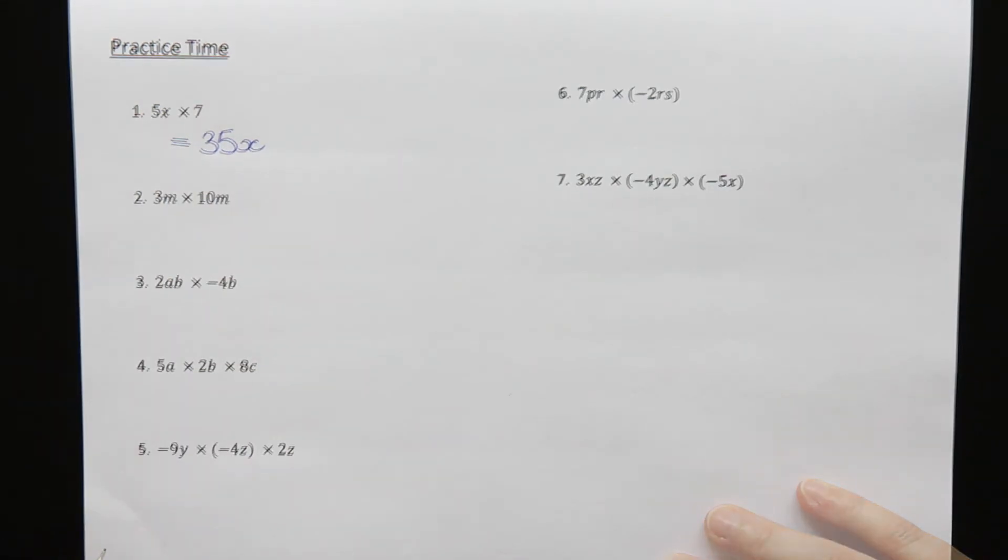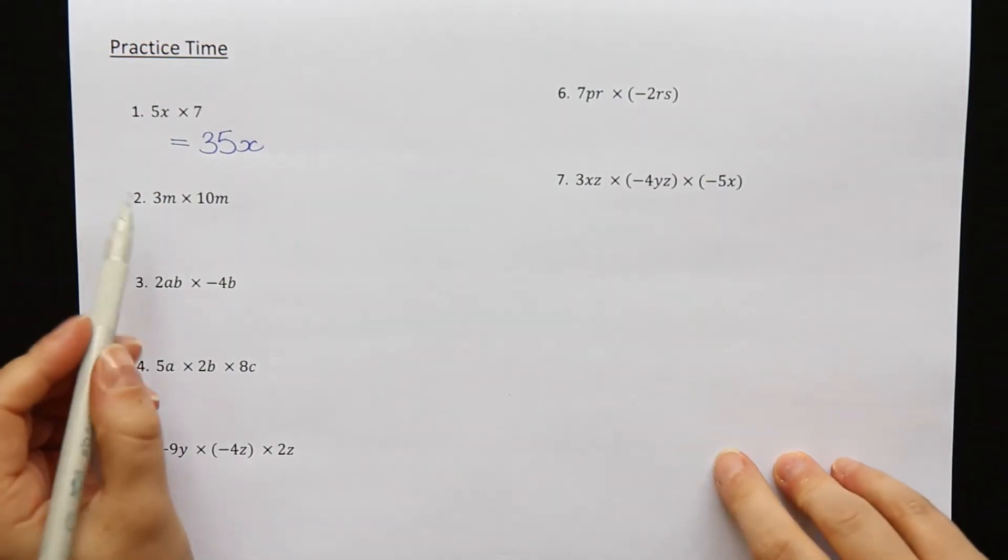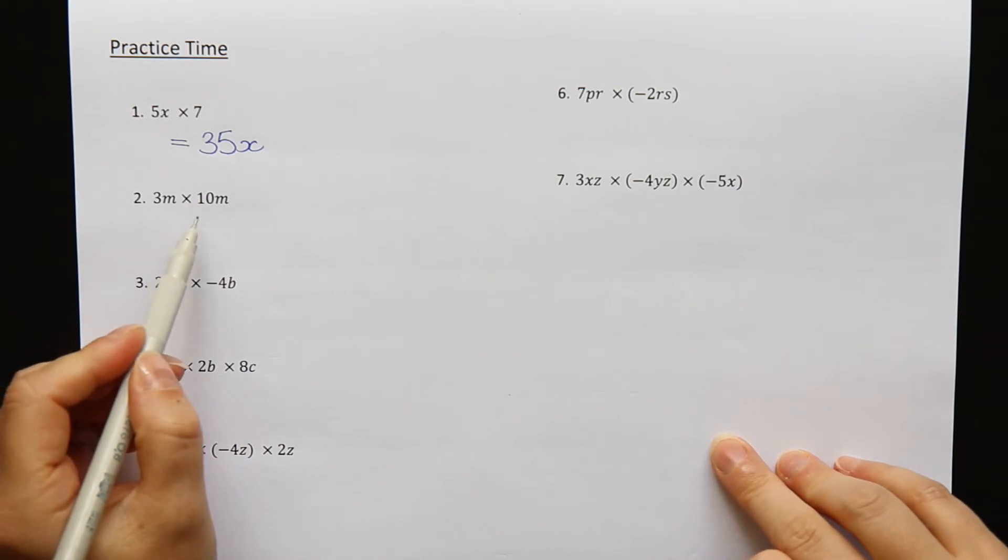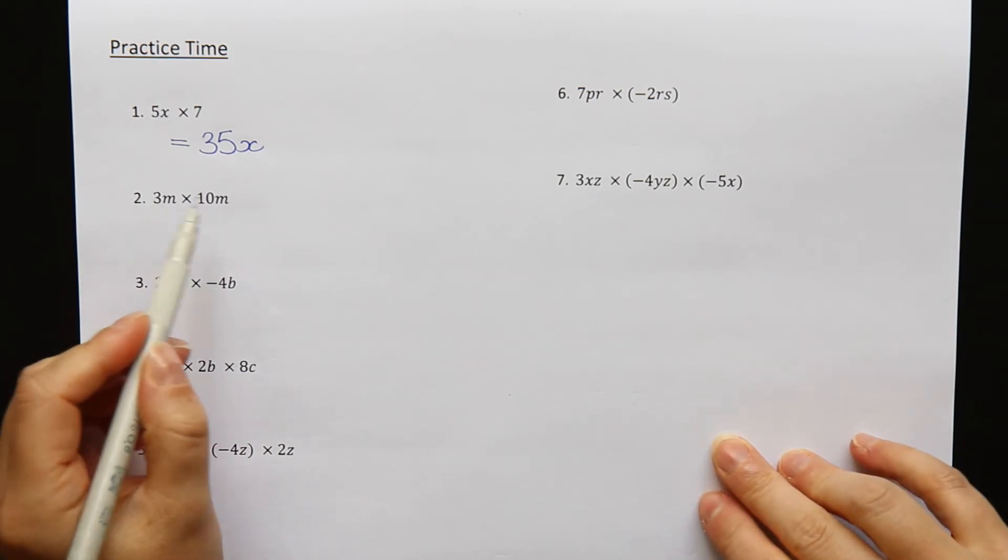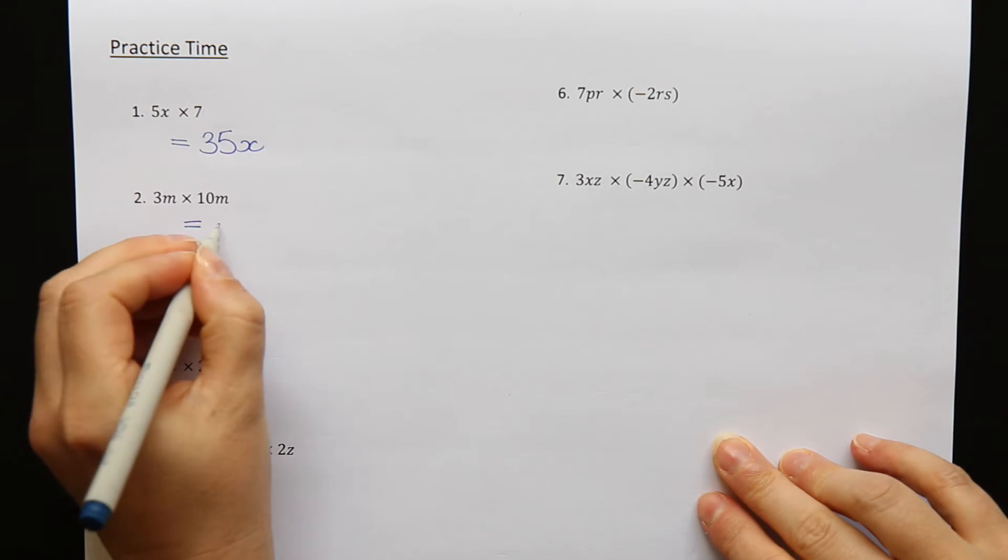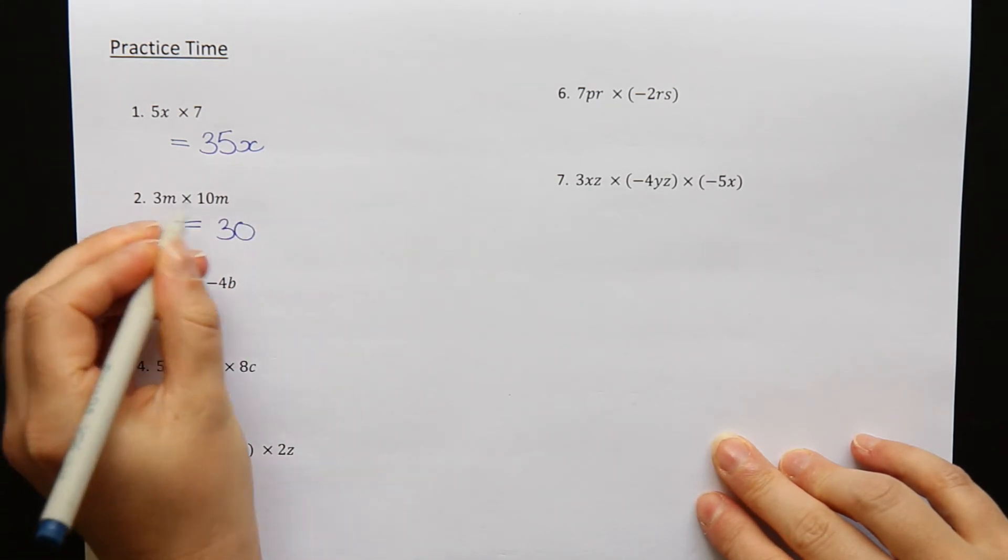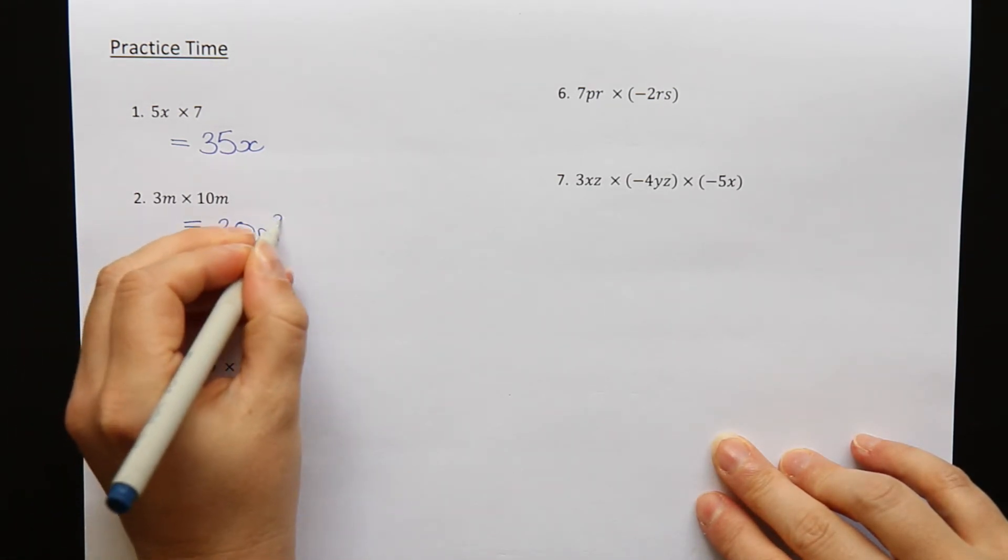Question 2: 3m times 10m. 3 times 10 is 30. m times m is m squared.